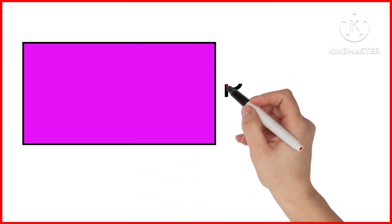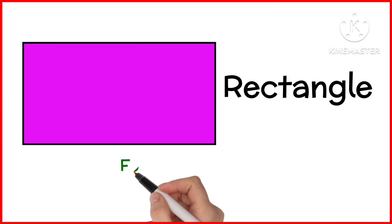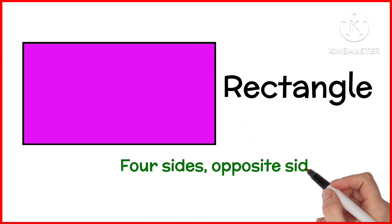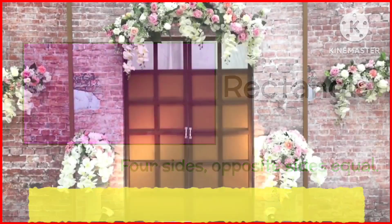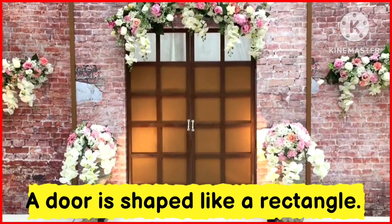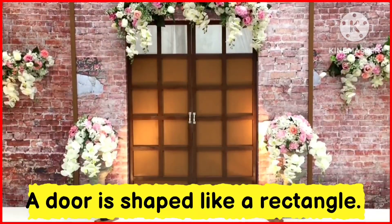Rectangle. Rectangle has 4 sides in which opposite sides are equal. A door is shaped like a rectangle.